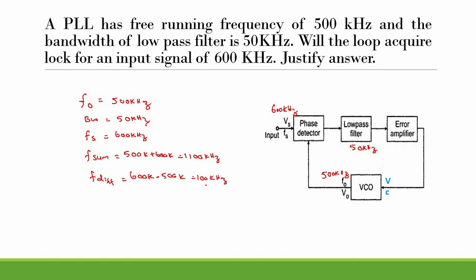These two frequency components — 100 kilohertz and 1100 kilohertz — are fed as inputs to the low-pass filter. This low-pass filter has a cutoff frequency of 50 kilohertz. Since both signals (minimum 100 kilohertz and maximum 1100 kilohertz) exceed the 50 kilohertz bandwidth, no signal can pass through the low-pass filter. Therefore, the PLL cannot acquire lock.